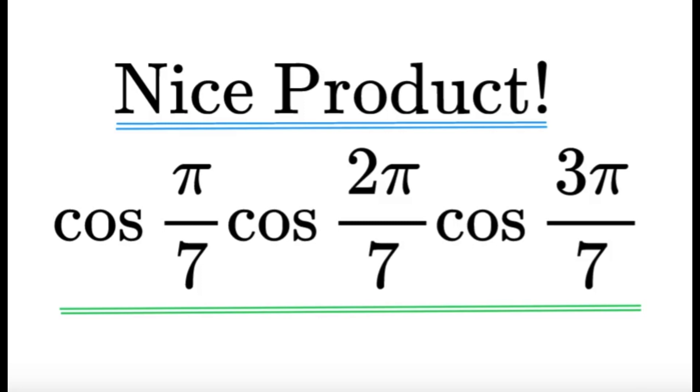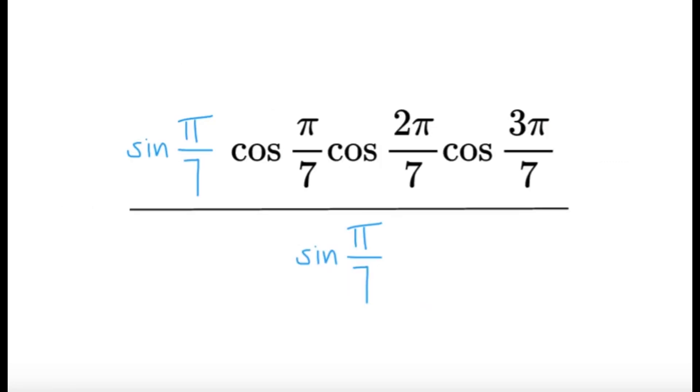All right. So first observation we see is that pi, two pi over seven, three pi over seven, they're obviously multiples of pi. And in these types of questions, we tend to manipulate it in a nice way. So today I'll be showing you one solution on proving this is going to be equal to one eighth. And that method will start by multiplying the numerator and the denominator by sine pi over seven.